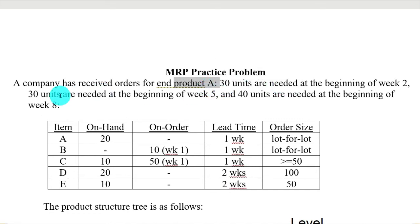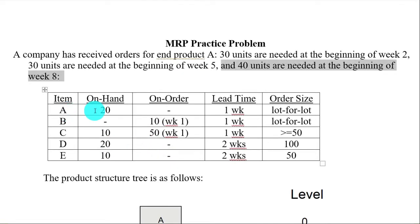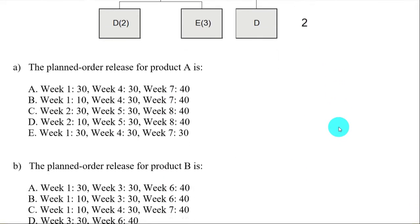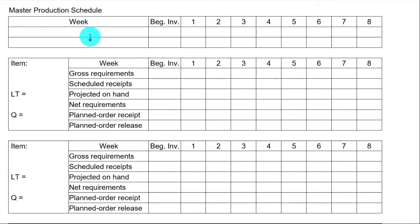Let's fill out the MPS form. For end product A, you need 30 at the beginning of week 2, 30 at the beginning of week 5, and 40 at the beginning of week 8. In the inventory record file, you have 20 on hand at the beginning of the planning period. Here in the MPS form, beginning inventory is 20.